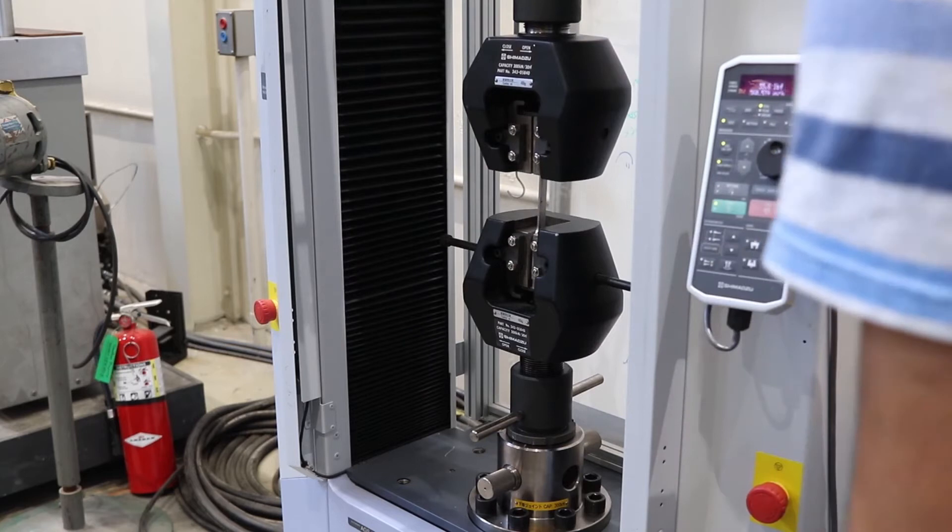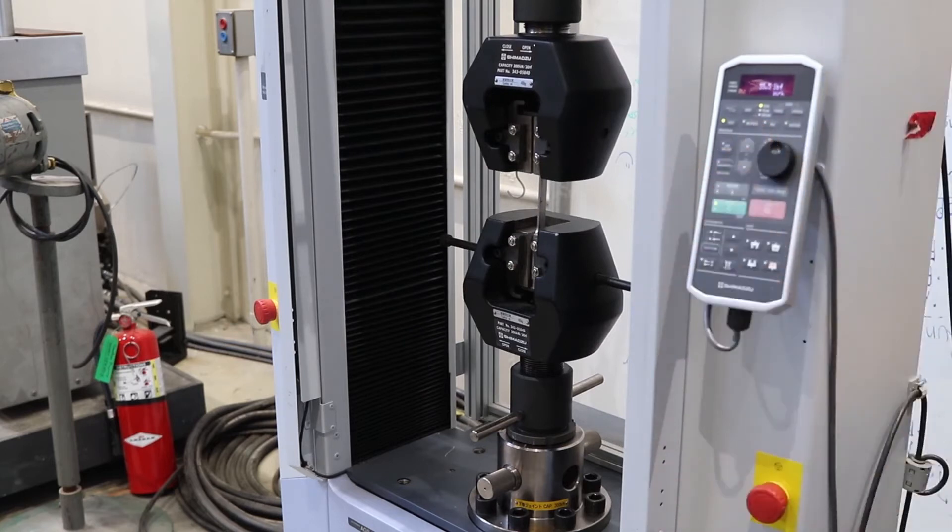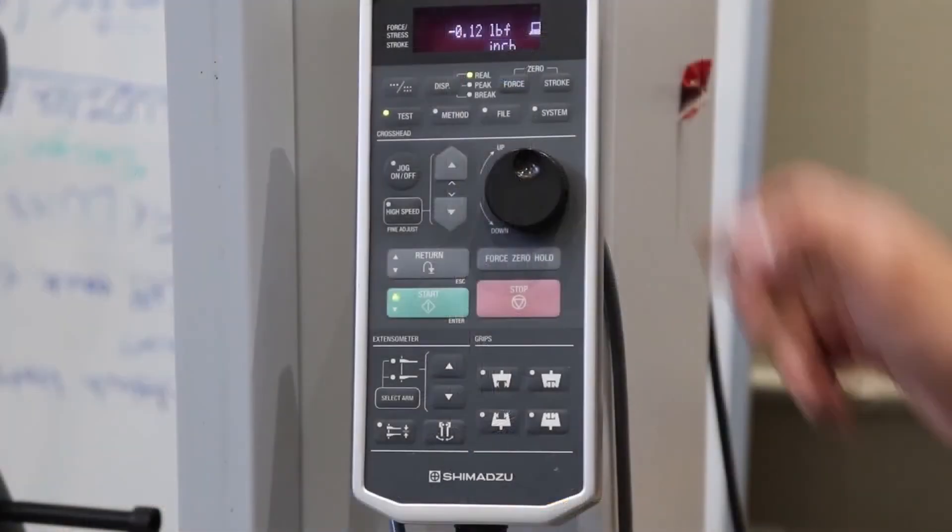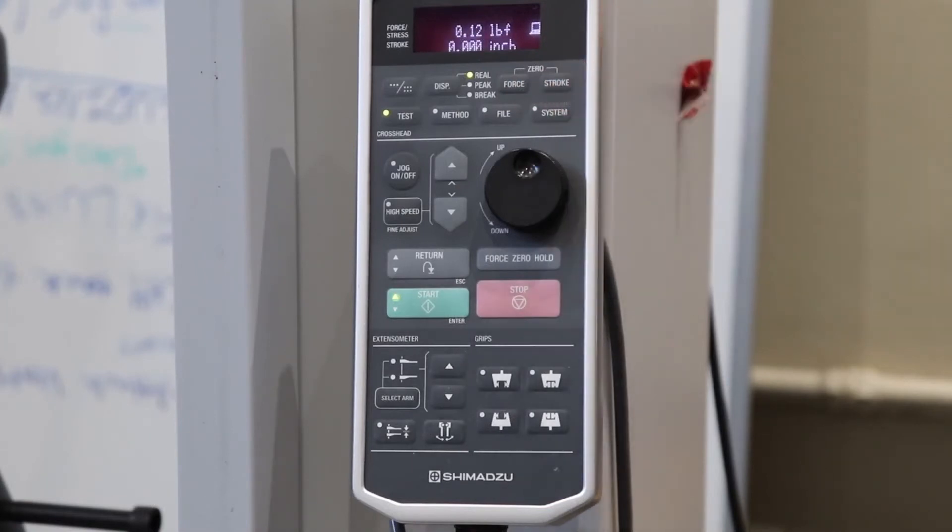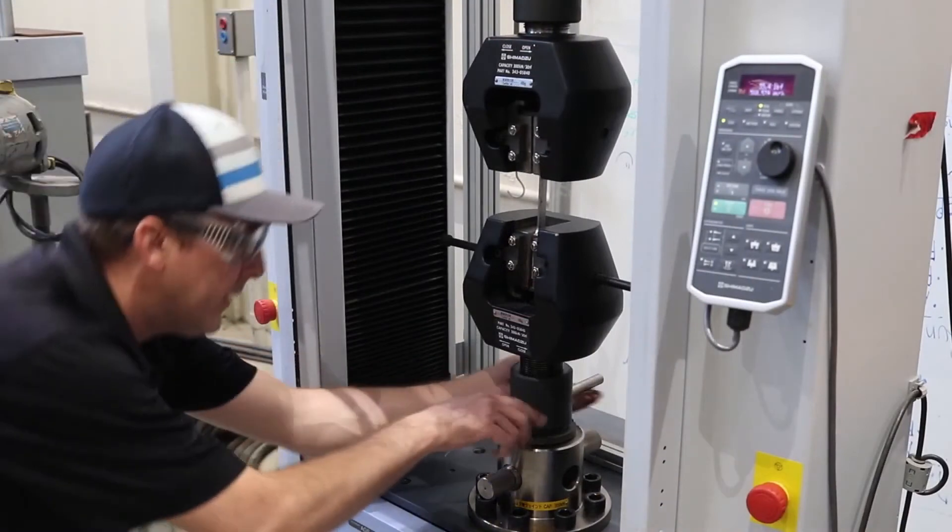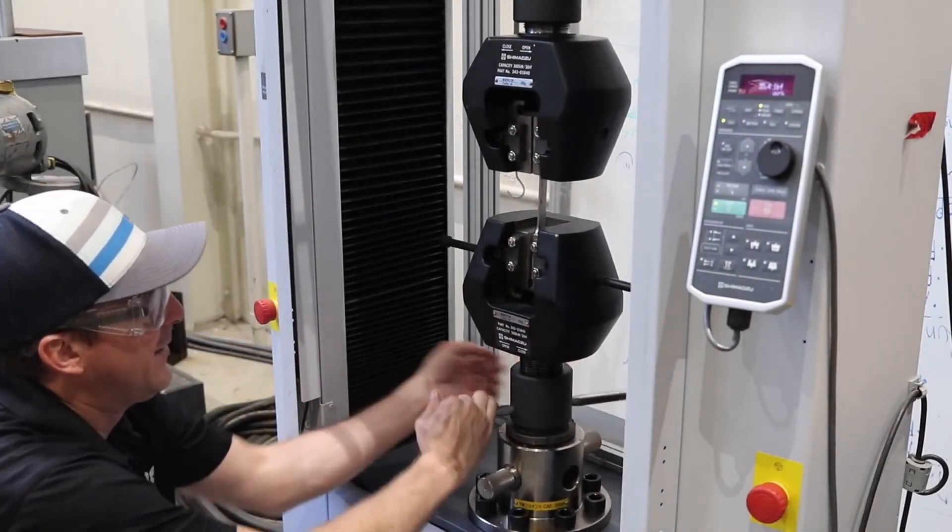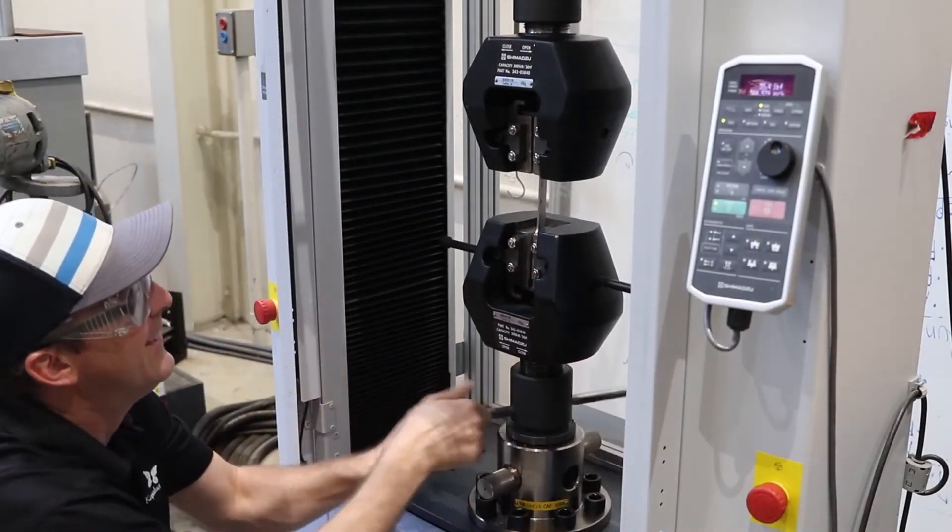After we are done jogging the head, we press the Jog On and Off and High Speed off. We now zero the machine on the control panel using the Force Zero and the Stroke Zero. This step is important to measure the preload. We now tighten the lower jaws, preloading the specimen.